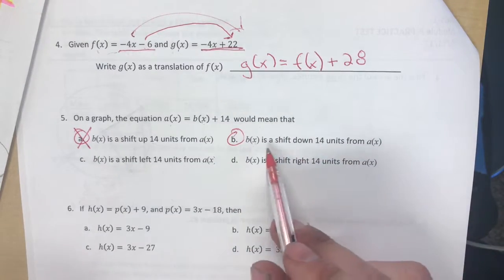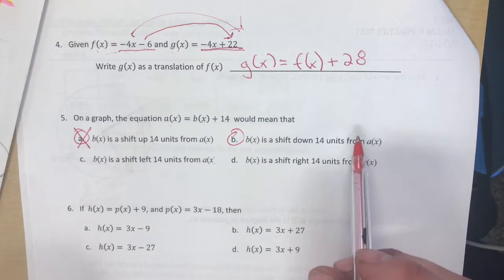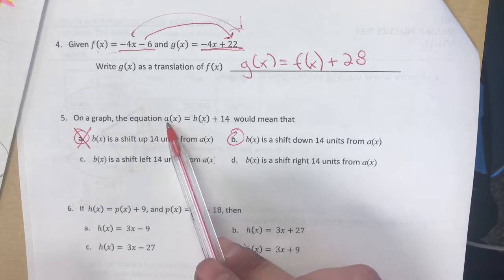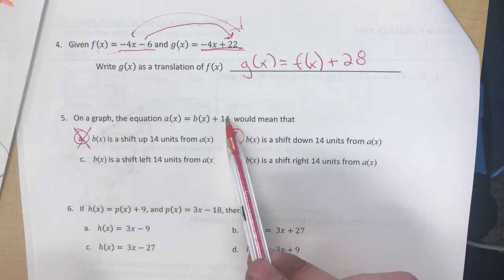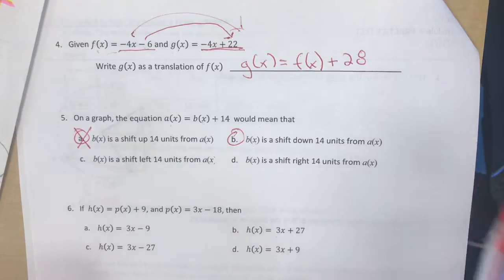So b(x) would mean that b(x) is 14 down from a(x), because a(x) is b(x) and 14 more. So that would be true that b(x) is 14 down from a(x), because in order to come up equal to a(x), we'd have to add 14. So that one is b.